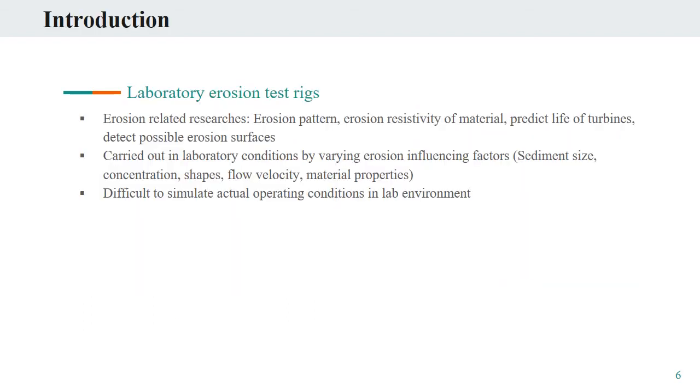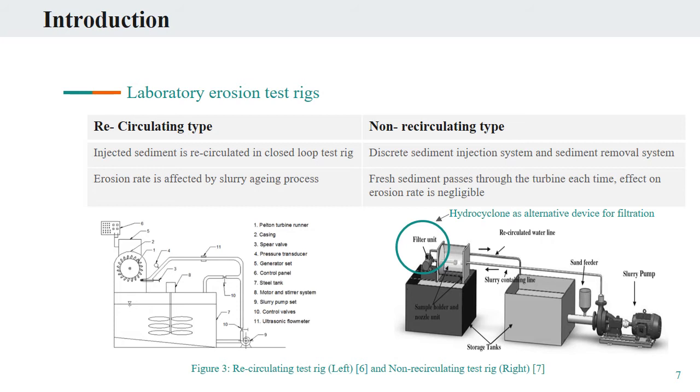Apart from the use of hydrocyclone in hydropower plants, this study presents its viability to use in developing lab-scale erosion test rigs. These erosion test rigs are developed to conduct erosion-related researches like locating possible erosion surfaces, testing erosion resistivity of material, predicting life of turbine, and studying erosion patterns. Such rigs are developed so that erosion influencing factors such as sediment size, concentration, shape, flow velocity, and material properties can be varied and controlled in lab conditions. However, it is difficult to simulate actual operating conditions in lab environment.